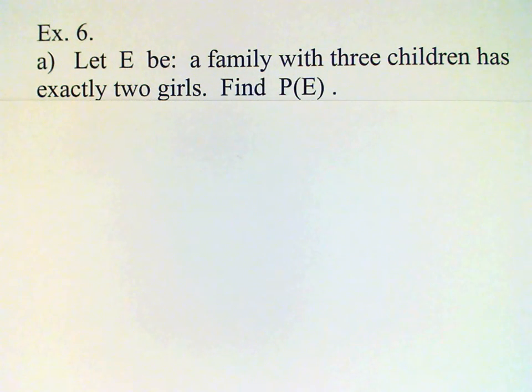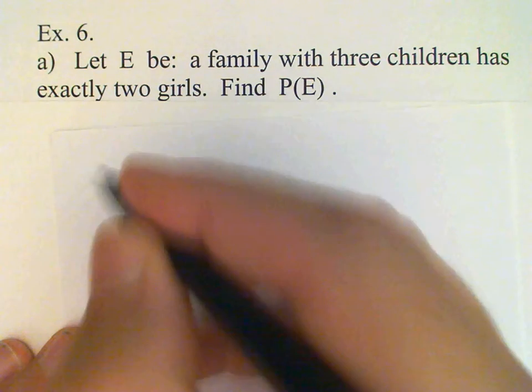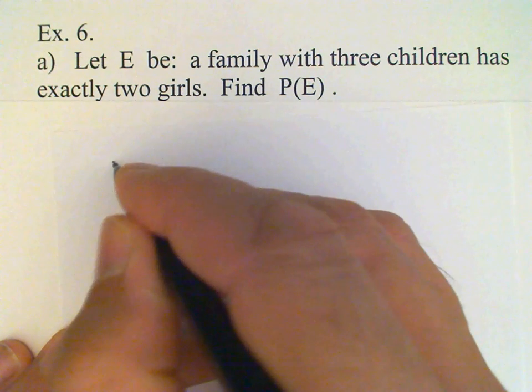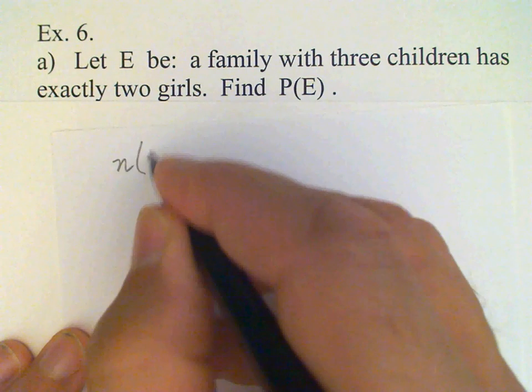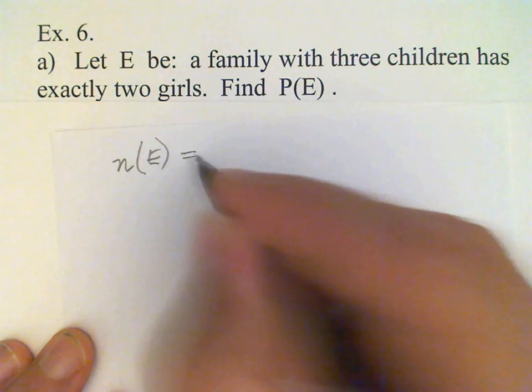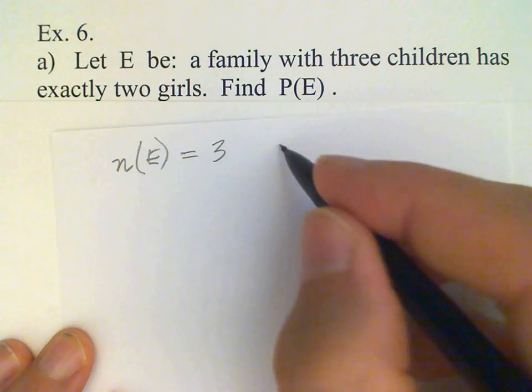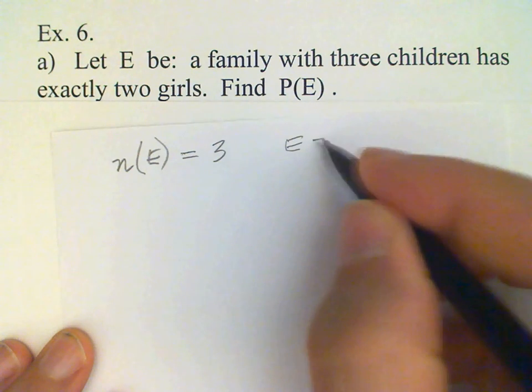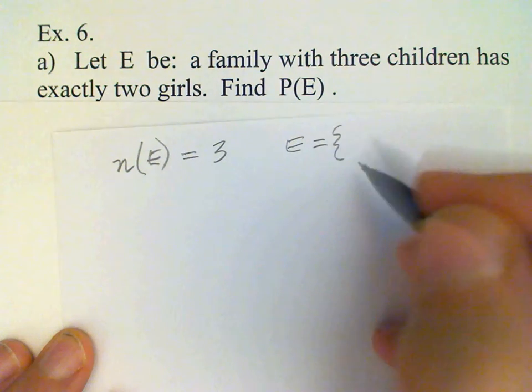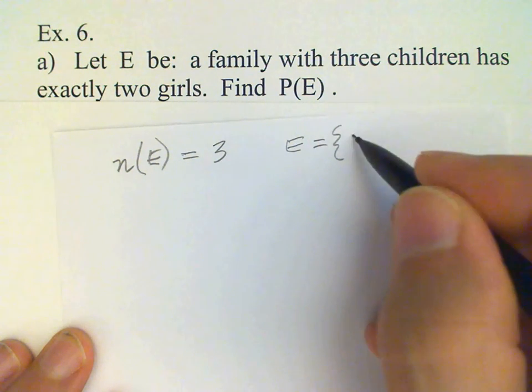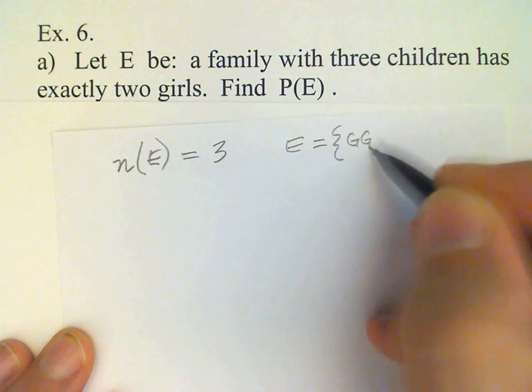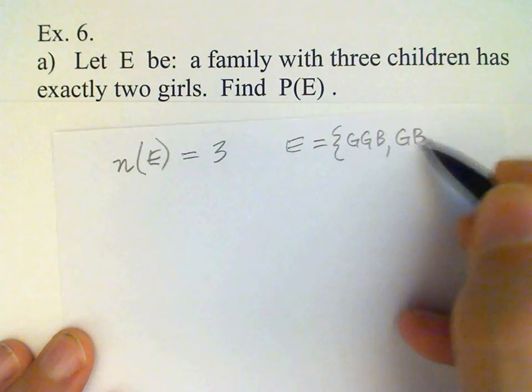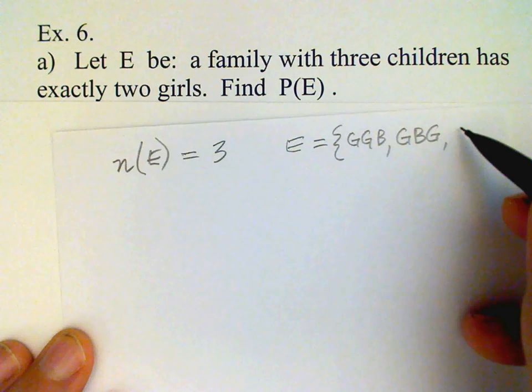Okay, so you remember in that sample space there were three outcomes that had two girls in them. So number in the event is three. I want to remind you that in this case the event is girl, girl, boy; girl, boy, girl; and boy, girl, girl.